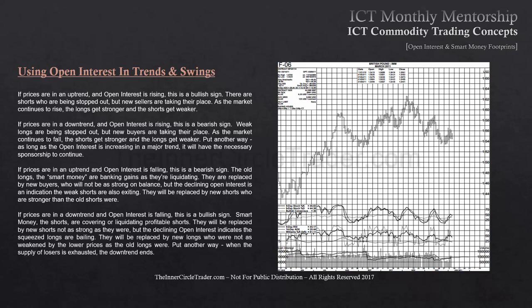If prices are in a downtrend and open interest is falling, this is a bullish sign. Smart money — the shorts — are covering and liquidating profitable shorts. They will be replaced by new shorts not as strong as they were, but the declining open interest indicates the squeezed longs are bailing. They will be replaced by new longs who are not as weakened by the lower prices as the old longs were. Put another way, when the supply of losers is exhausted, the downtrend ends.